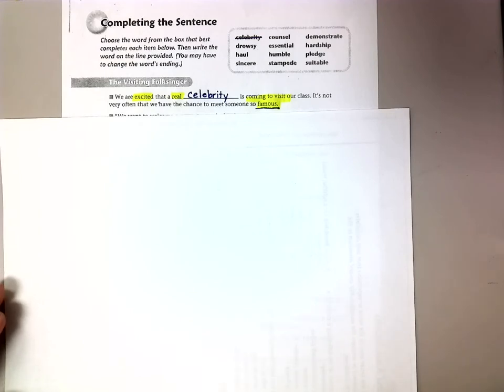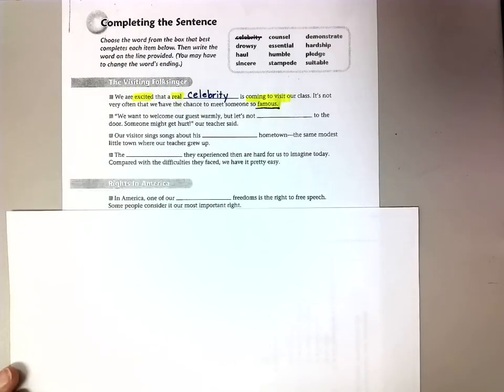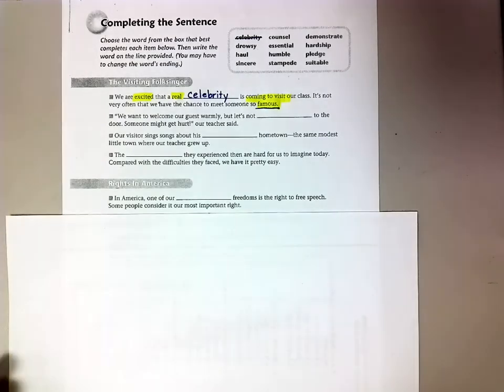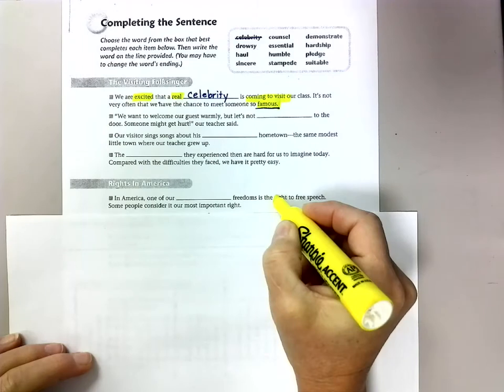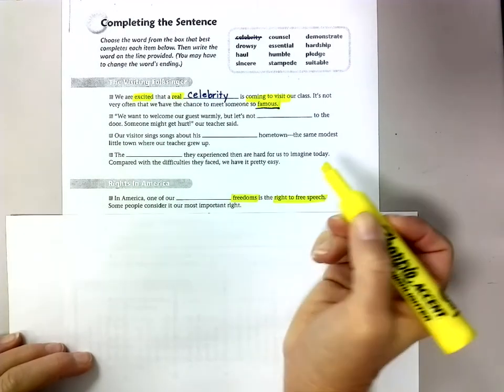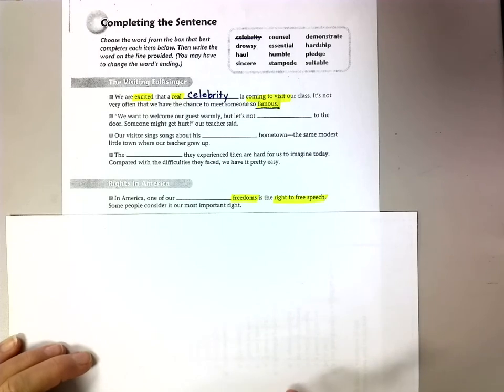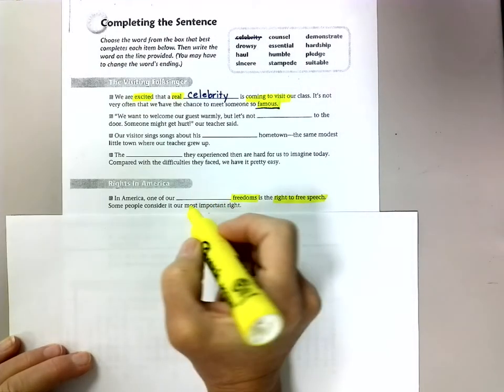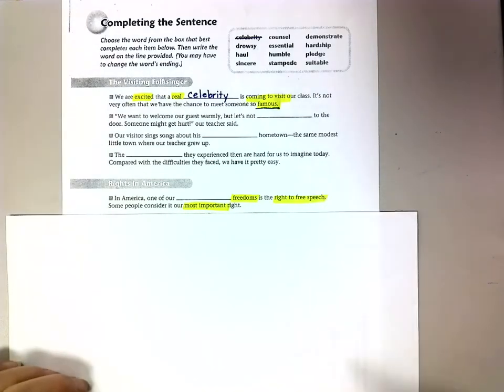So I'm going to go down. I'm going to do another one with you. And this time I'm going to do it with the Rights in America section. Again, I'm going to look at that very first one. And it says, in America, one of our blank freedoms is the right to free speech. So the right to free speech is one of our freedoms. And it says, some people consider it the most important right, most important. So when I'm looking back at my words, I'm trying to think about what word means the most important.